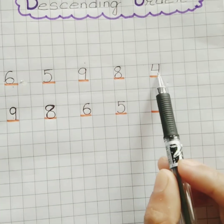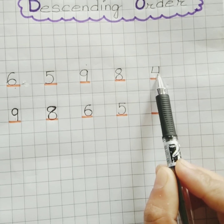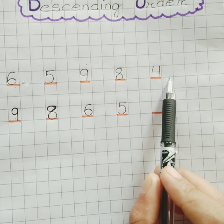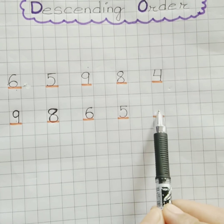Finally, number 4 is the smallest number. So we'll write number 4 at last here.